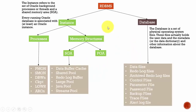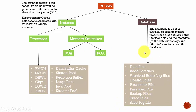In summary, an instance is nothing but a set of background processes and the memory structures, whereas a database is nothing but the set of physical operating system files. In the coming sessions, we will be learning about each one of these processes, each one of these memory structures, and each one of these files in detail.